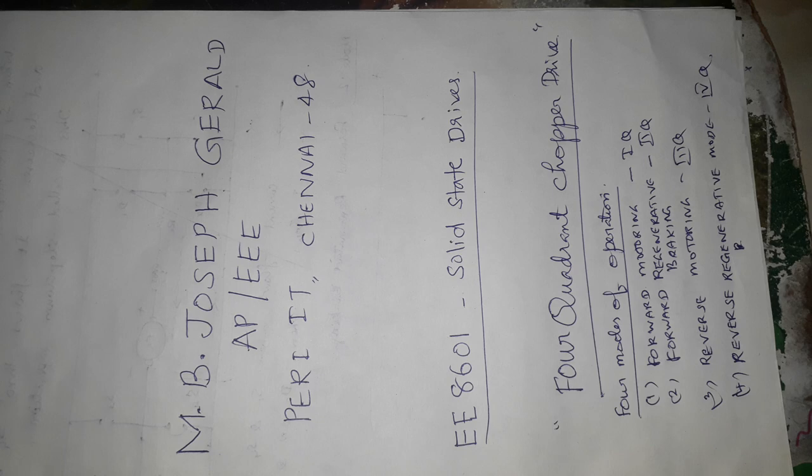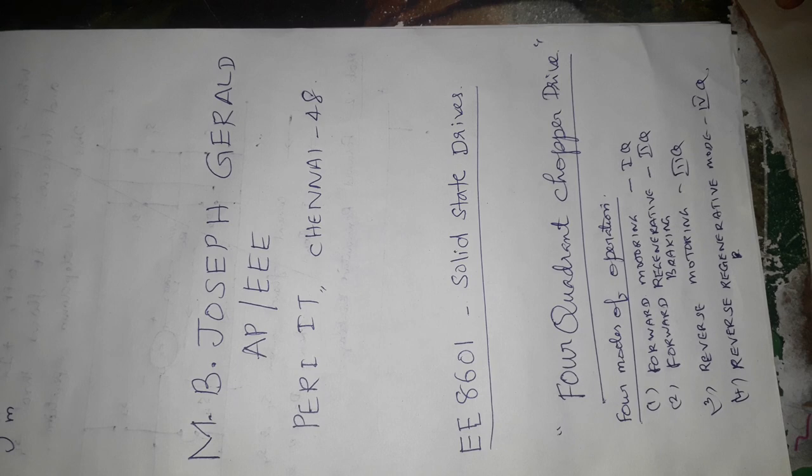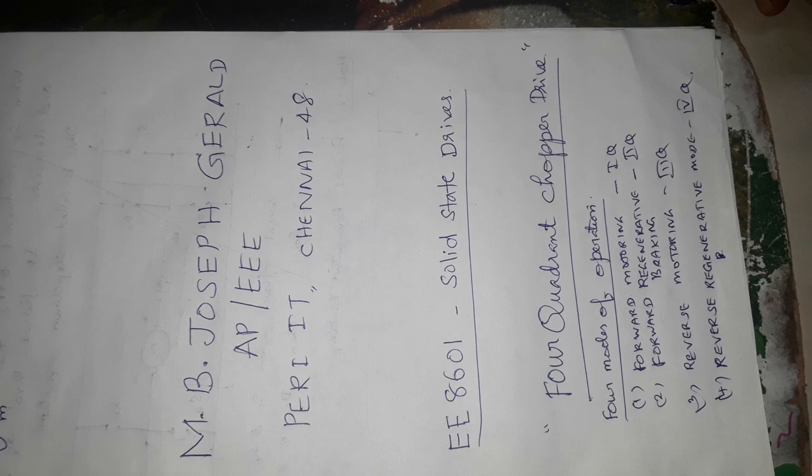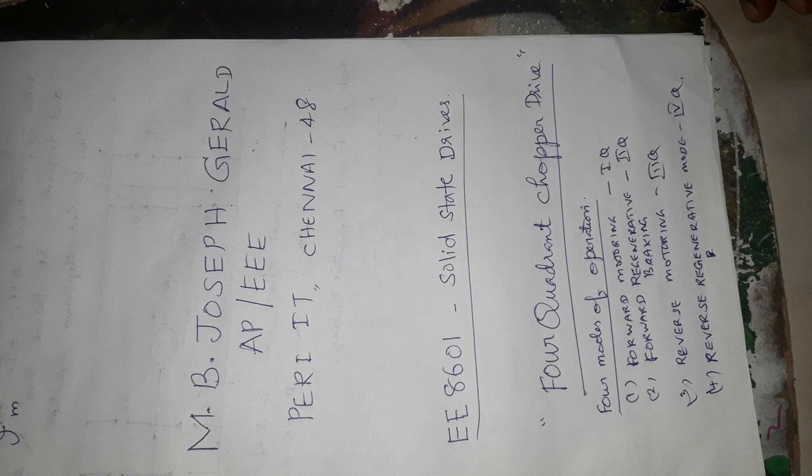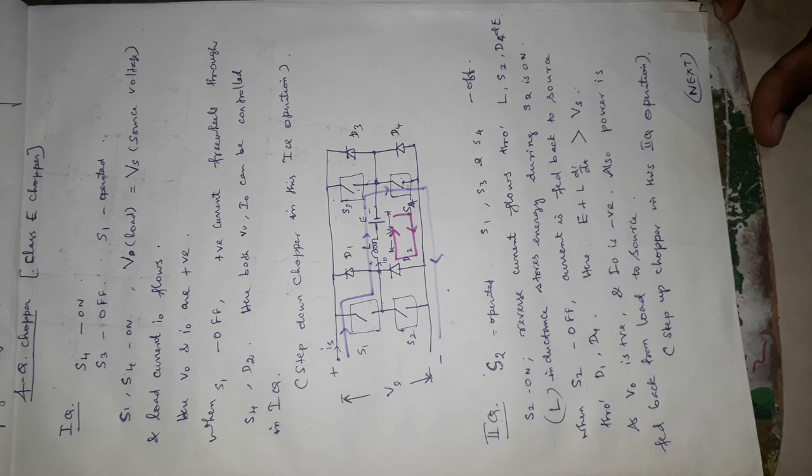There are four modes of operation in 4 Quadrant Chopper Drive. One is forward motoring in first quadrant. Second, forward regenerative braking in second quadrant. Third, reverse motoring mode in third quadrant. And fourth, reverse regenerative mode in fourth quadrant. The 4 Quadrant Chopper is also called a Class E Chopper.